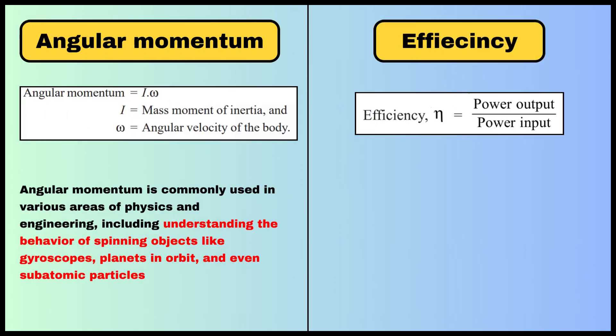The next term is angular momentum. Angular momentum is the product of moment of inertia and the angular velocity of the body. It is a very important term for understanding the behavior of spinning objects like gyroscopes, planets in orbit, and even subatomic particles.